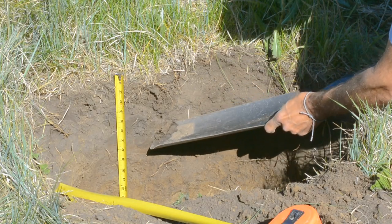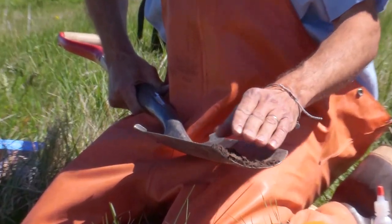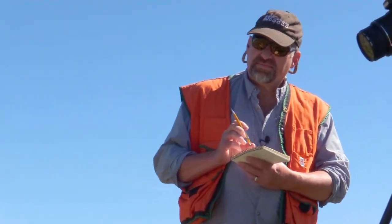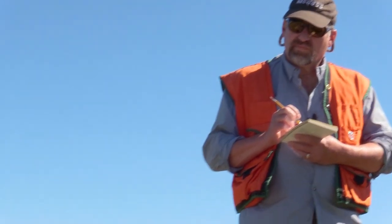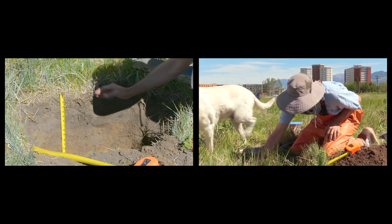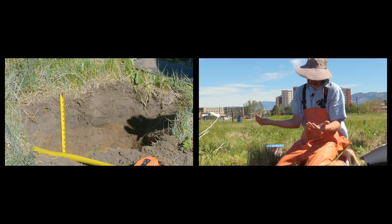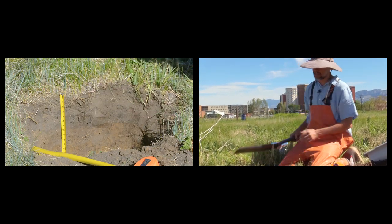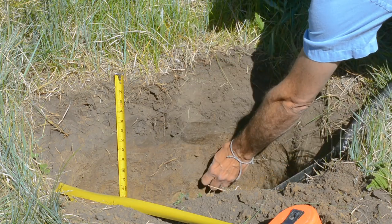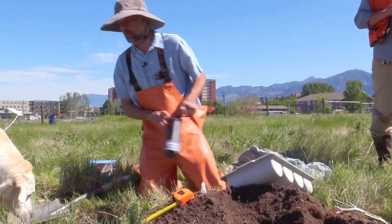It looks to me like we've got an intermediate color between 4 and 8 inches, as well as an intermediate structure. Would you name these horizons? The first horizon is going to be an A horizon. Because the color change is so subtle between the first and second horizon, I would go A1, A2, and then I think we're pretty obviously into some kind of B horizon in the subsurface. The best way to tell what kind of B it is, is to check for how much clay.